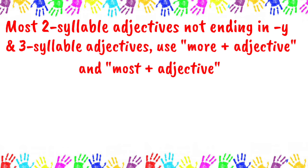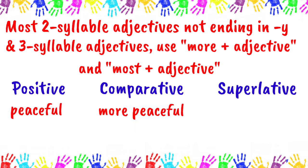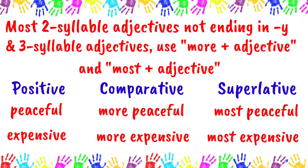Next rule: for most two-syllable adjectives not ending in Y, and three-syllable adjectives, use the form 'more' plus adjective for comparative and 'most' plus adjective for superlative. For example: peaceful, more peaceful, most peaceful; expensive, more expensive, most expensive.